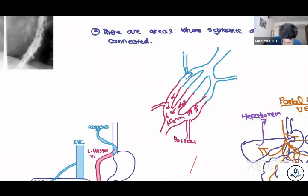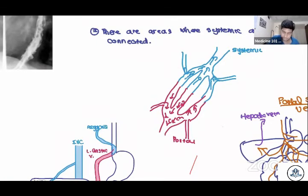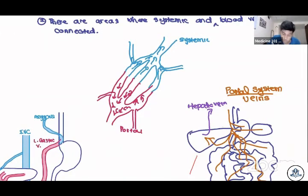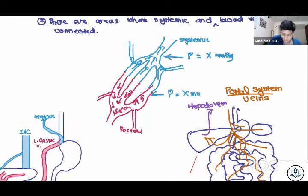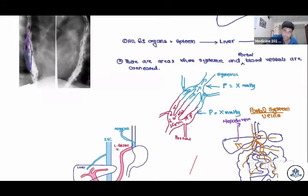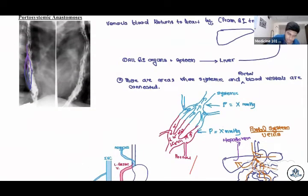Can someone try to guess why the blood never mixes? There is no pressure difference. The pressure in the systemic vessels and the pressure in the portal system are the same — let's call it X. In normal patients, the pressure in the systemic circulation is equal to the portal circulation, so the blood does not mix. If you don't understand this, the rest will be confusing.